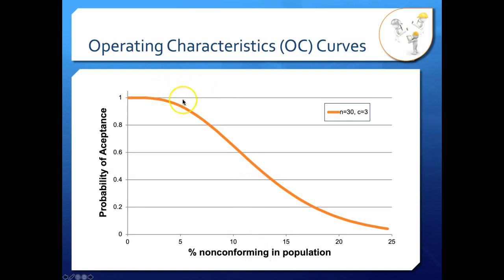So here's the sample OC curve. In this curve, we have a sample size of 30 and acceptance criteria of 3. So here n is 30, c is 3, and this is the general curve shape for that particular plan. But how did we get that curve shape? How do we know, for example, that if we have a percent non-conforming in our population about 5%, we have a probability of acceptance of somewhere around 0.92? How do we figure that out?